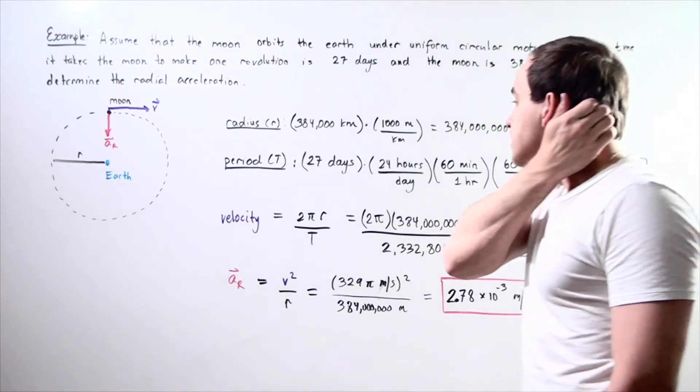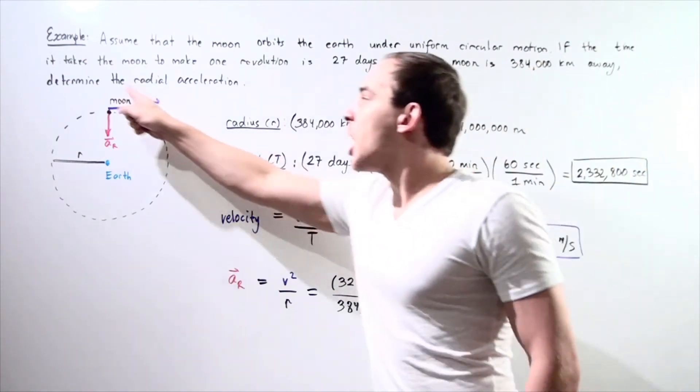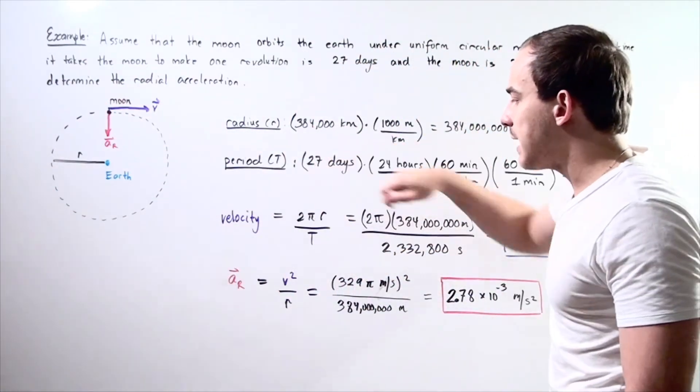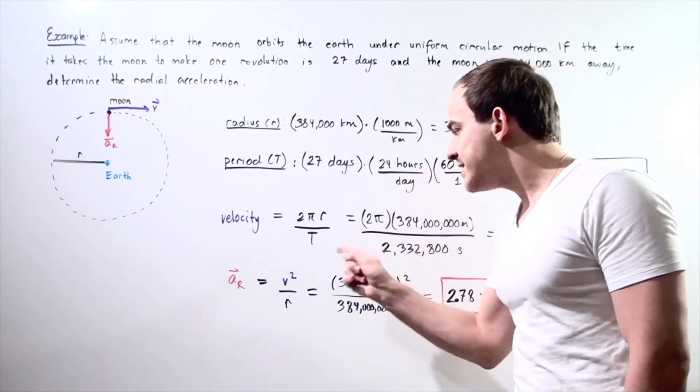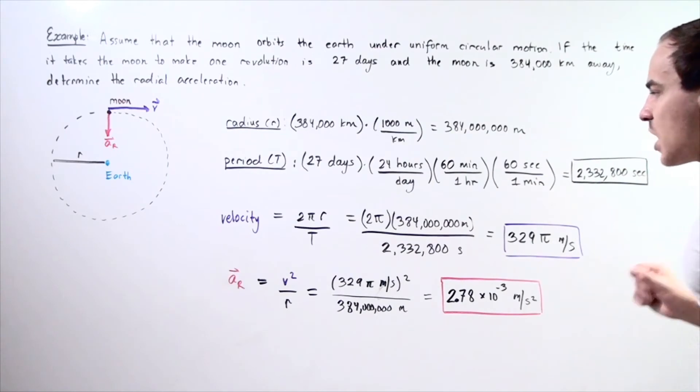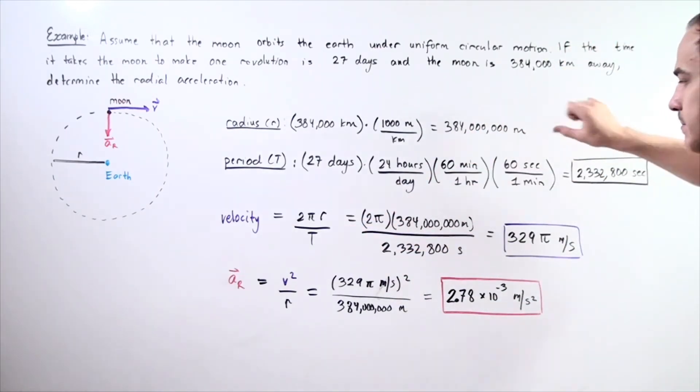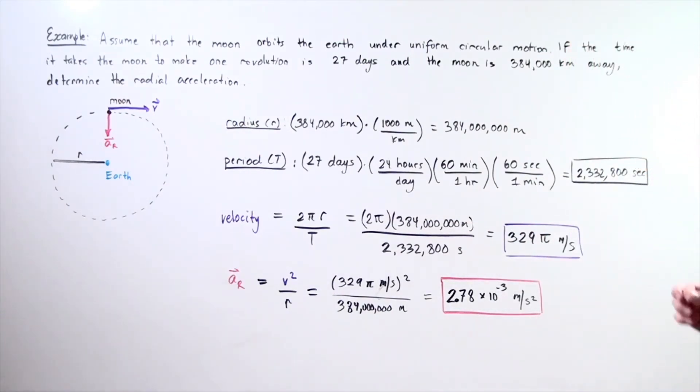Now, let's find the velocity. To find the velocity, we use the following formula: our circumference divided by our period. So, 2 pi times R divided by T. We know what R is, and we know what T is. Let's plug that in. 2 times pi times R, which we found here to be meters, divided by what we found here in seconds. And we get 329 pi meters per second.